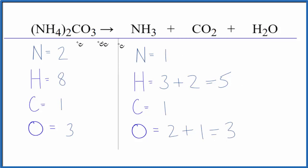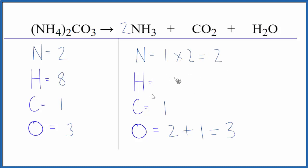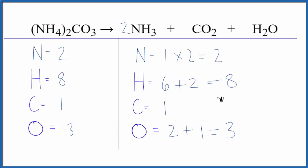Let's go ahead and fix the nitrogen first. If we put a two as our coefficient — one times two — that'll give us two. Then we need to update the hydrogen, since that's changed. We have two times three, that's six, plus we have the two here, gives us eight, and we're done. This equation is balanced.